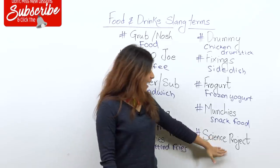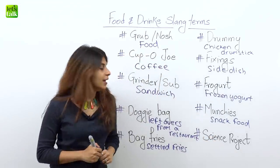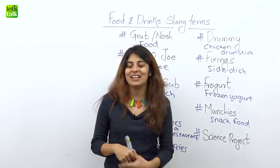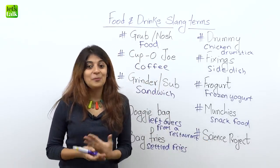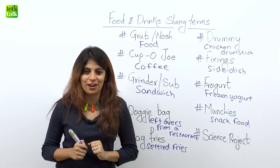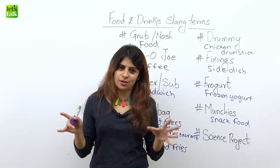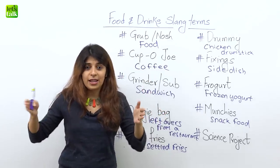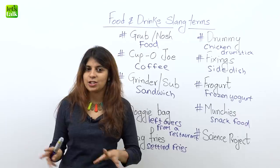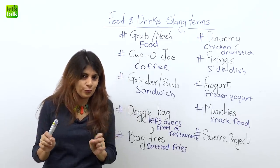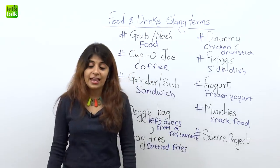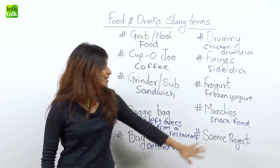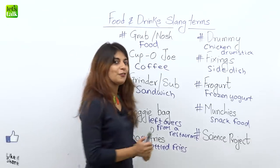The last one is quite interesting: 'science project.' Are you working on a project? Well, science project is a slang term used for spoiled food in the refrigerator. We have a habit of putting leftovers in the fridge and then totally forgetting about them. A few days later when you're cleaning and you spot some spoiled, dirty food, you can call it a science project. For example: 'Hey, look at this science project that was lying in the fridge for so many days!' So science project means spoiled food left in the refrigerator.